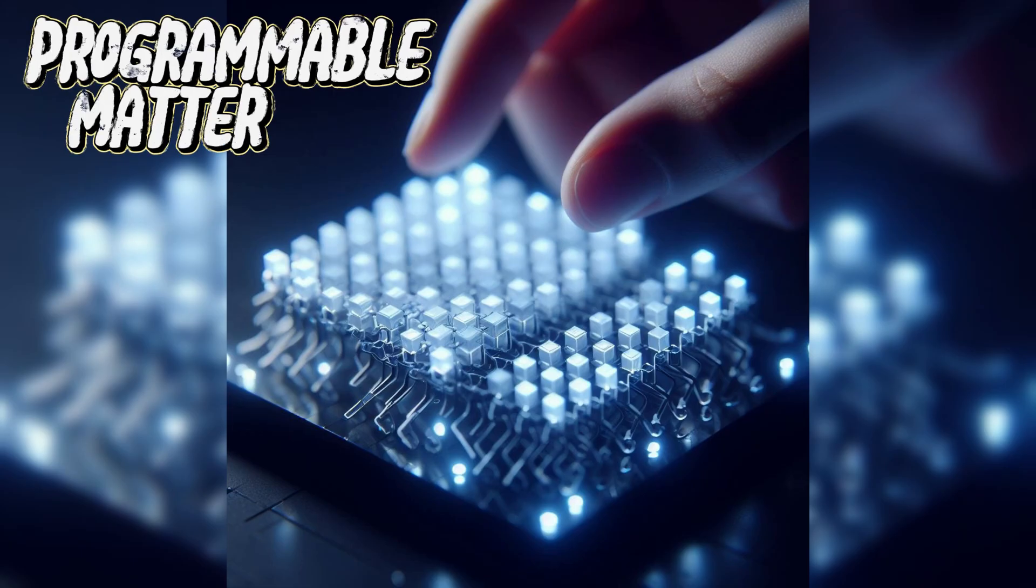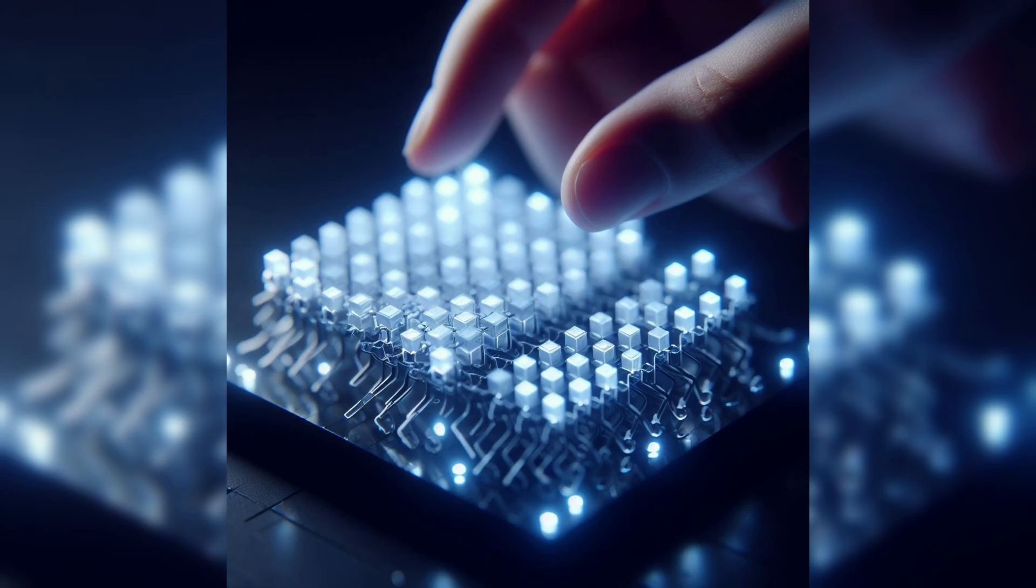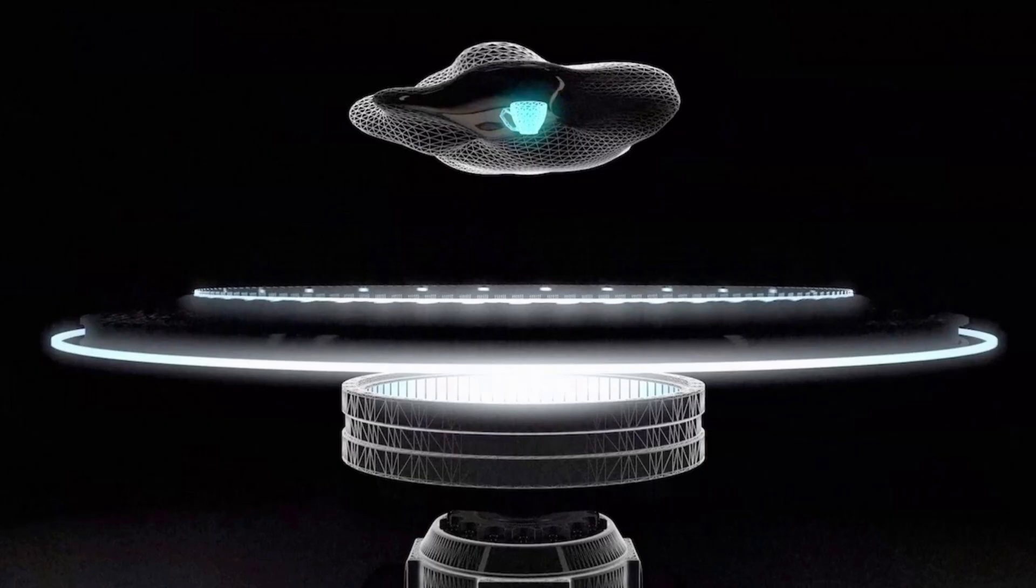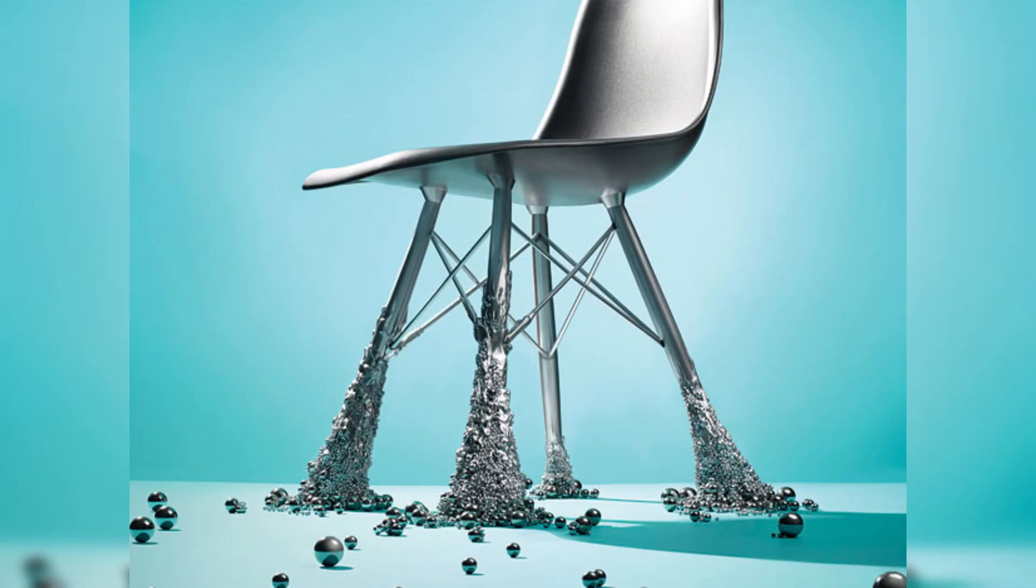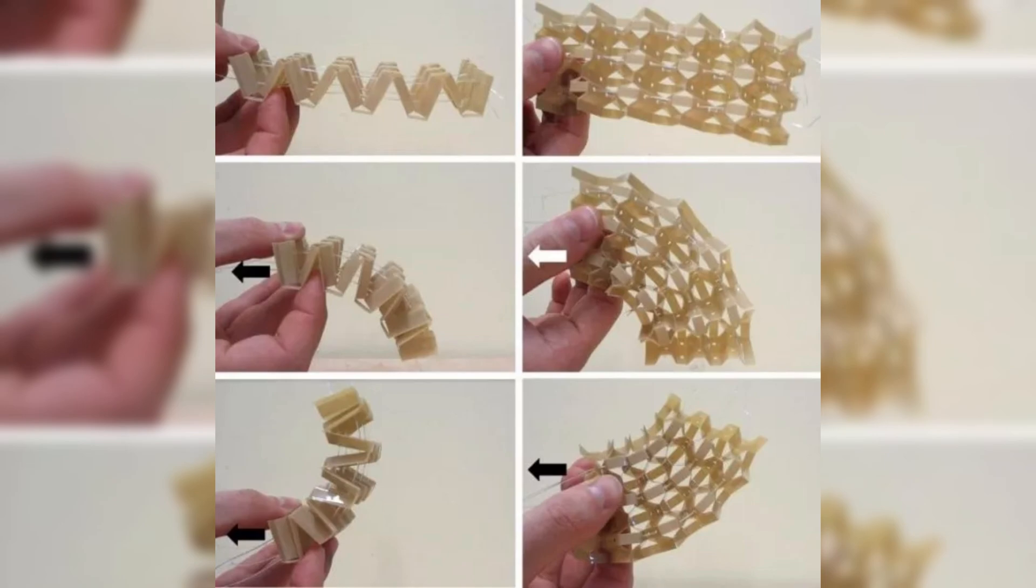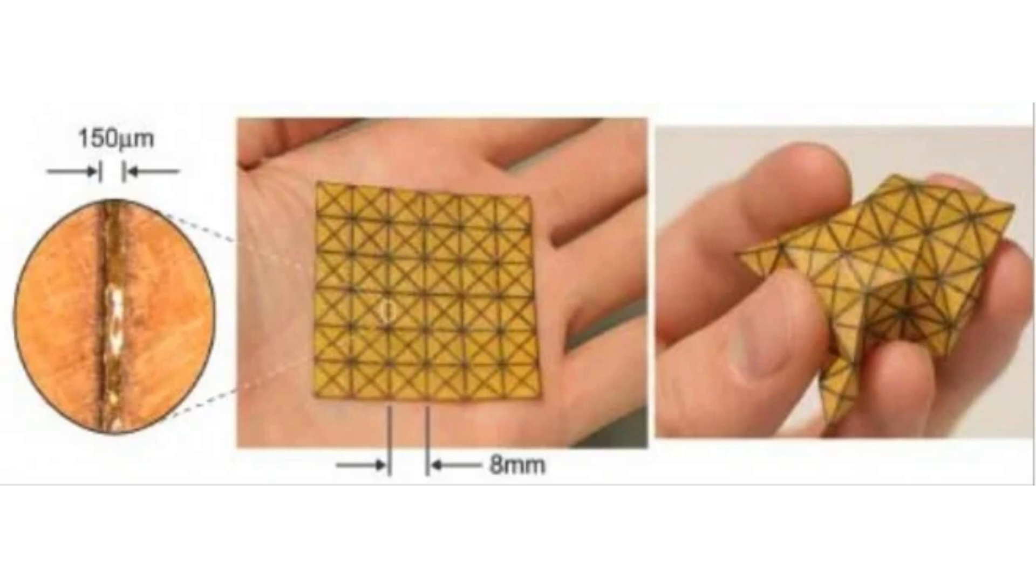Next is programmable matter. Programmable matter is matter which has the ability to change its physical properties in a programmable fashion based upon user input or autonomous sensing. Programmable matter is thus linked to the concept of a material which inherently has the ability to perform information processing. Programmable matter is a proposed digital material having computation, sensing, actuation, and display as continuous properties active over its whole extent.